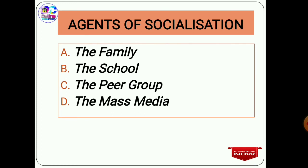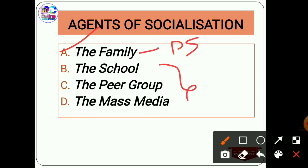The agents of socialization — as shown in the first slide — include four types: family, school, peer group, and mass media. Family represents primary socialization, while the other three represent secondary socialization. Family primarily influences the child up to four years of age. The family provides the child with its first social contact with the world, developing correct patterns of behavior. Learning occurs informally, and approved behaviors get rewards while rejected behaviors get punishment.